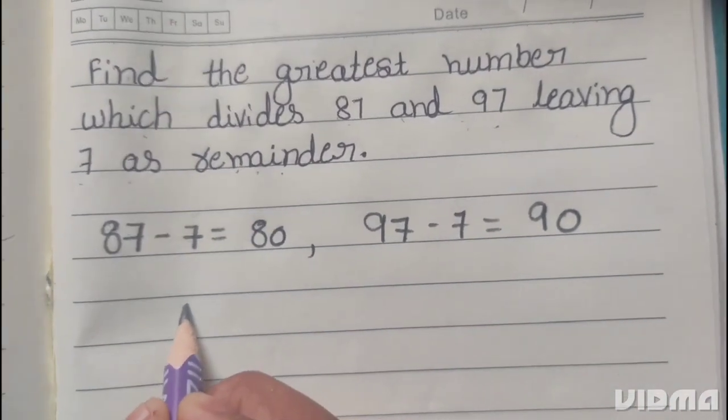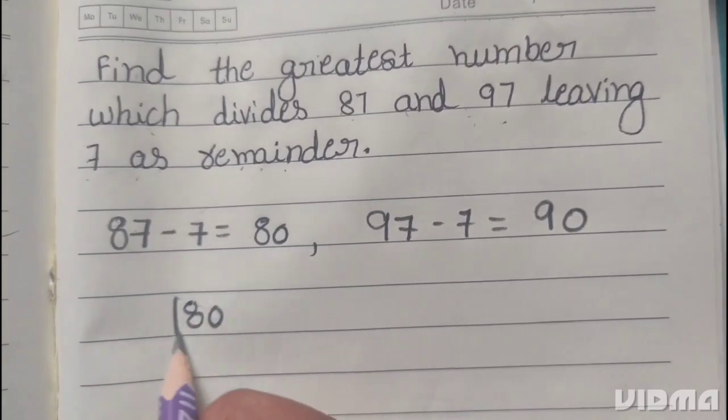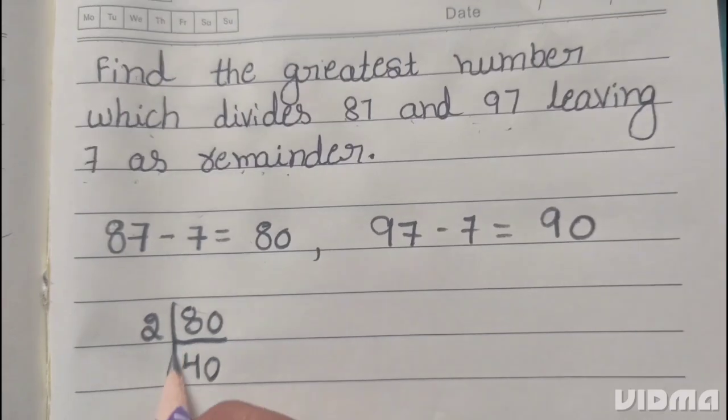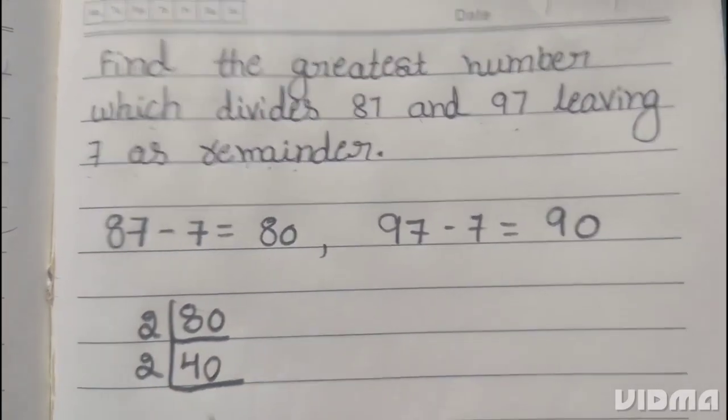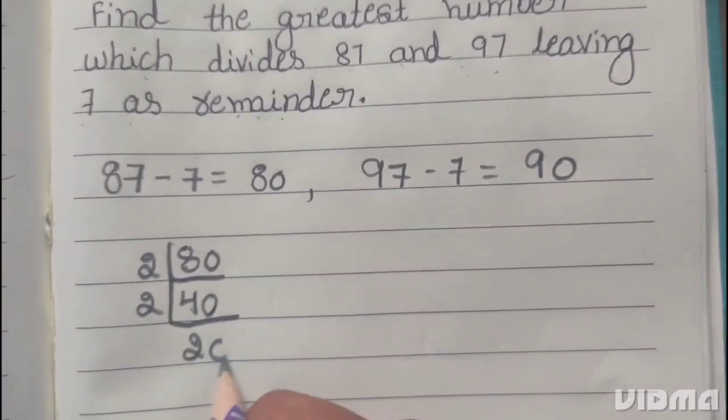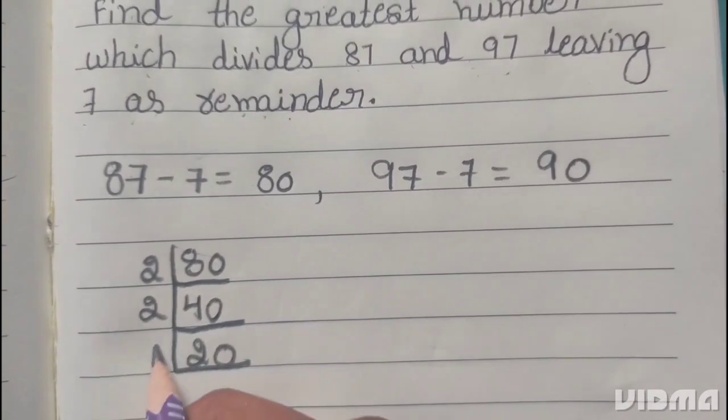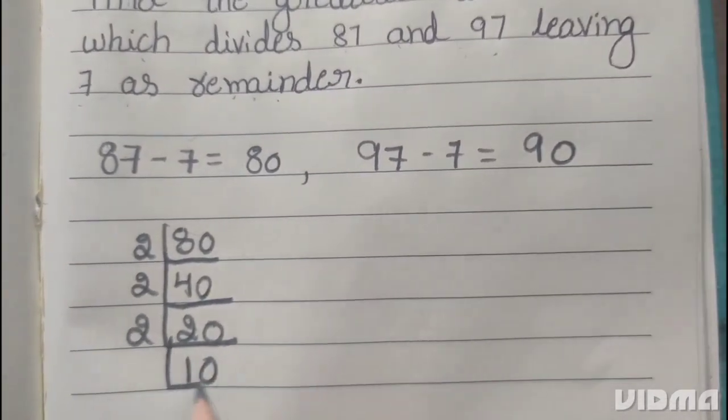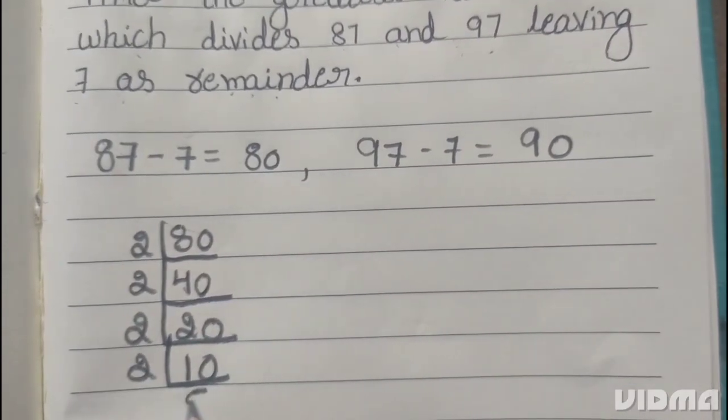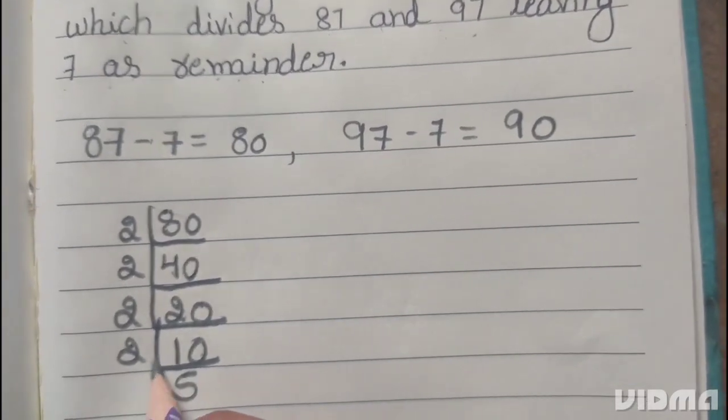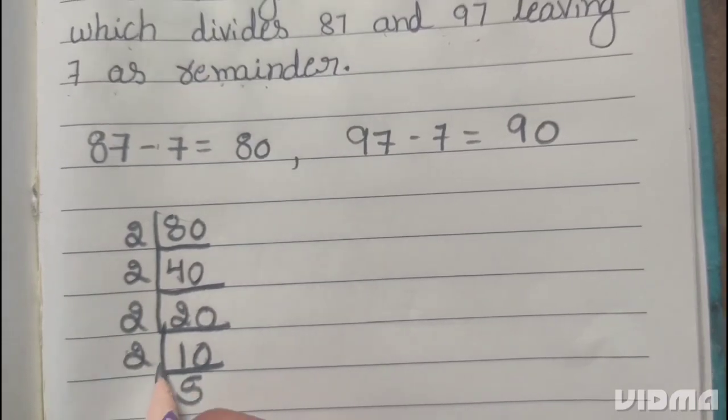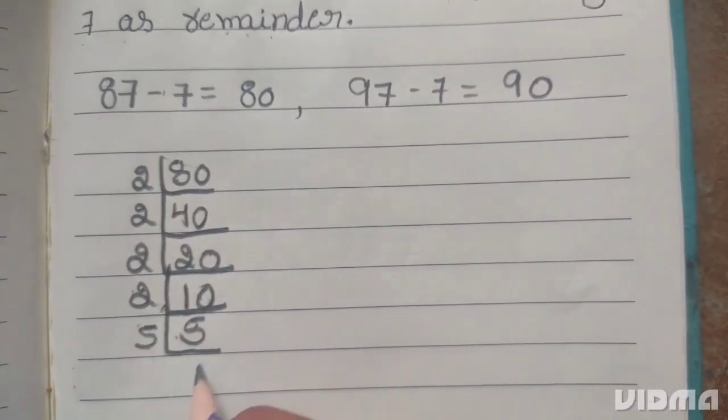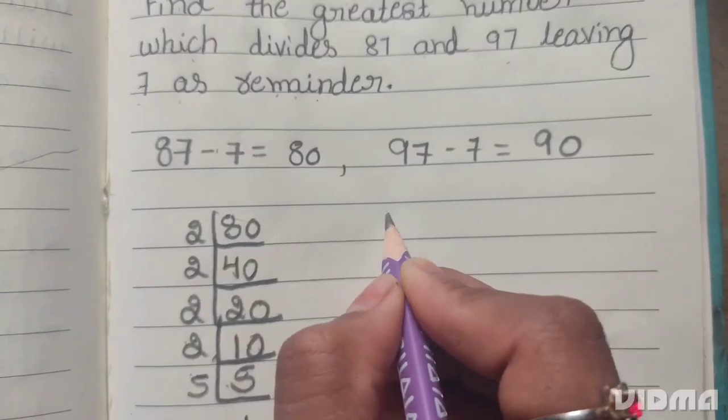First we do 80. 80 is divisible by 2. 2 fours are 8, 0. 2 twos are 4, 0. 2 ones are 2, 0. 2 fives are 10. 5 is prime number. It divides itself. 5 ones are 5.